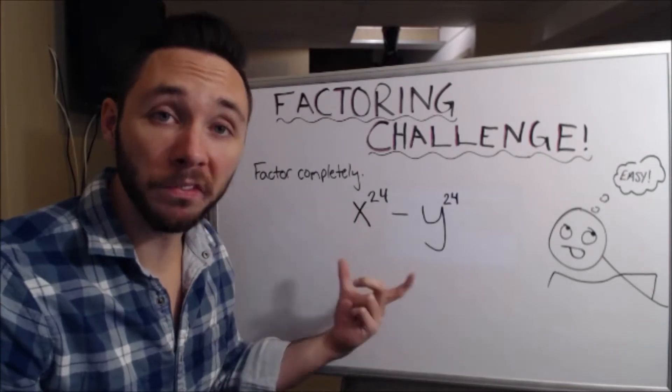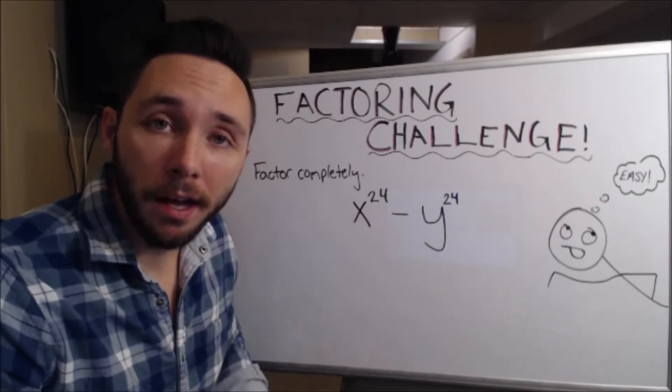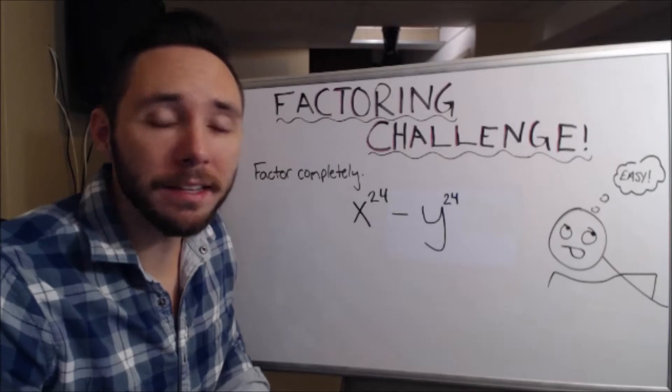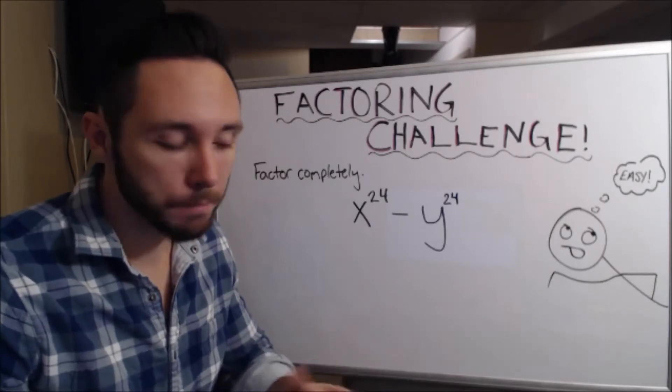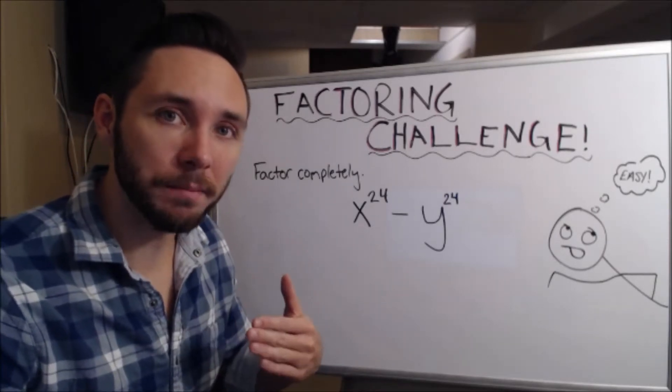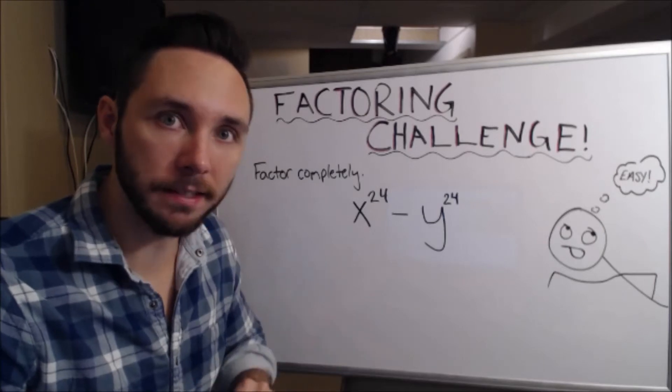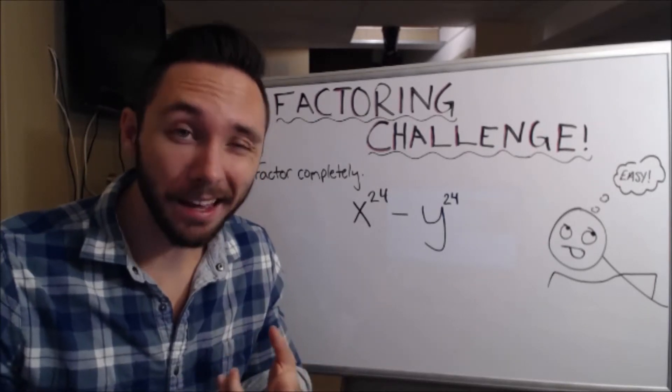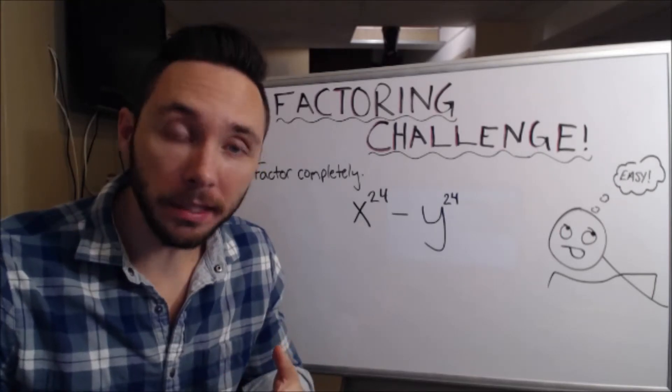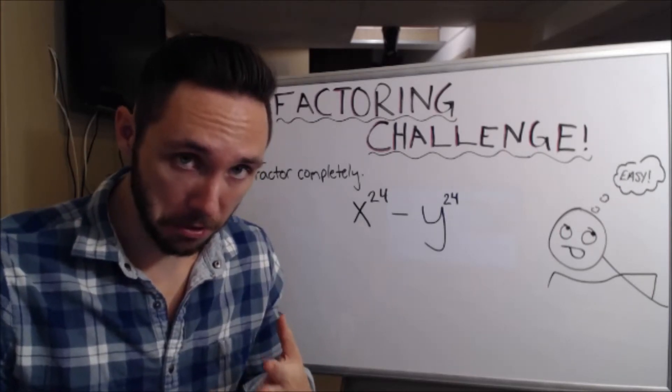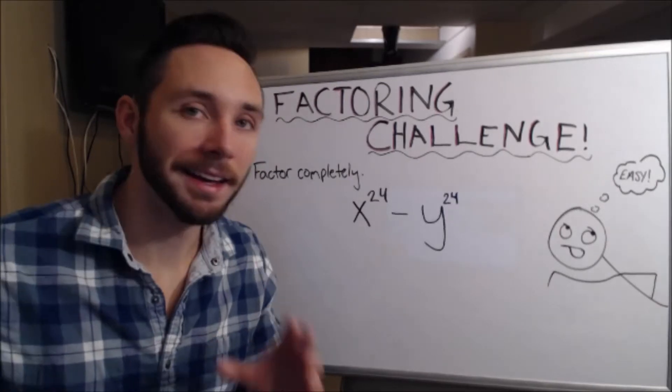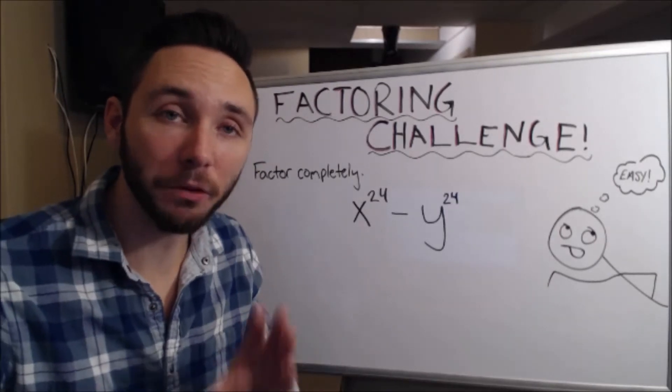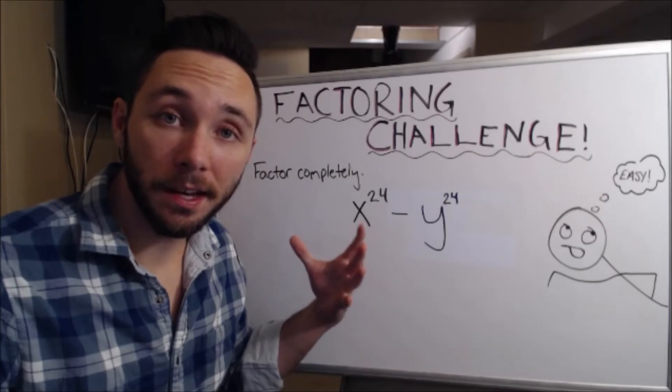This problem right here is mathematically equivalent to that one friend we all have that is this simple, cute, innocent person on the surface. But once you really get to know them, deep down they are just this feisty diva. They're the type of people that yell at customer service over the phone, lay on the horn every chance they can on the road, and ultimately just that type of person that you don't want to mess with. So that person's mathematical representation is right here.